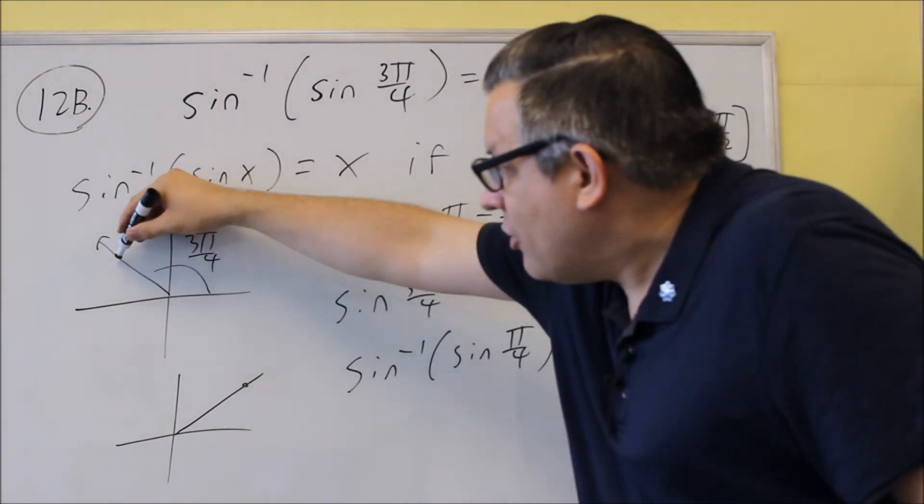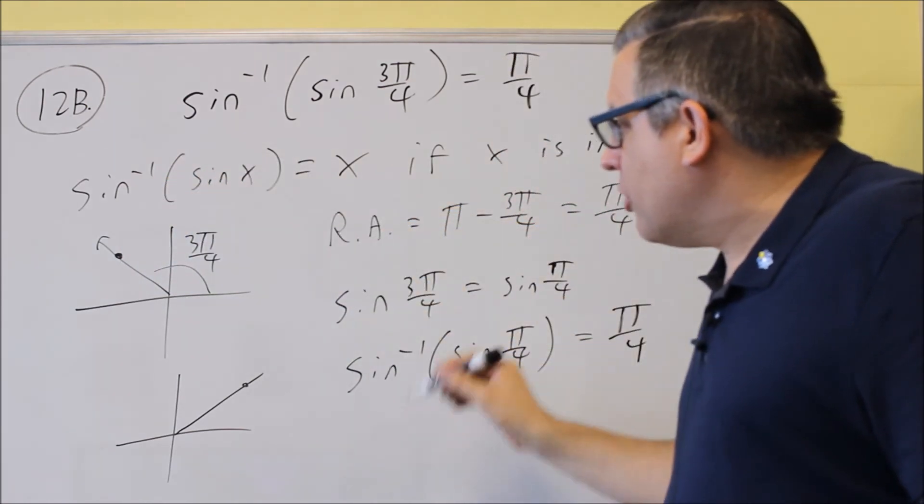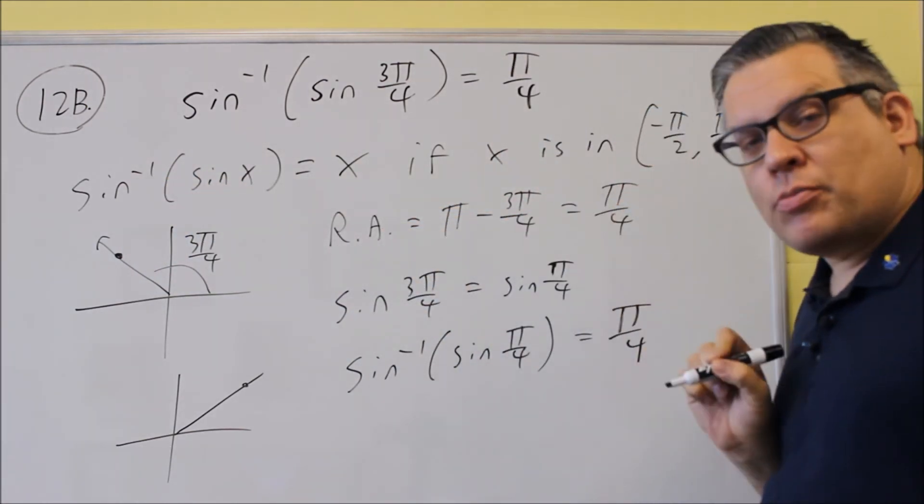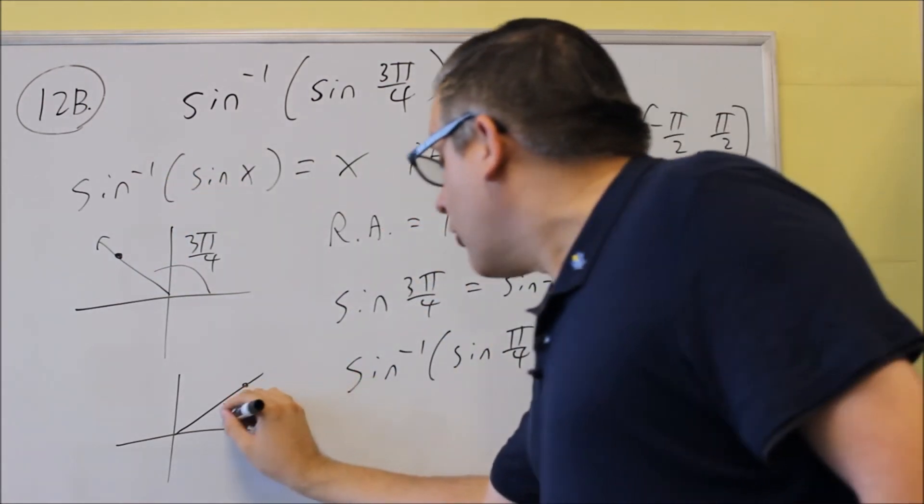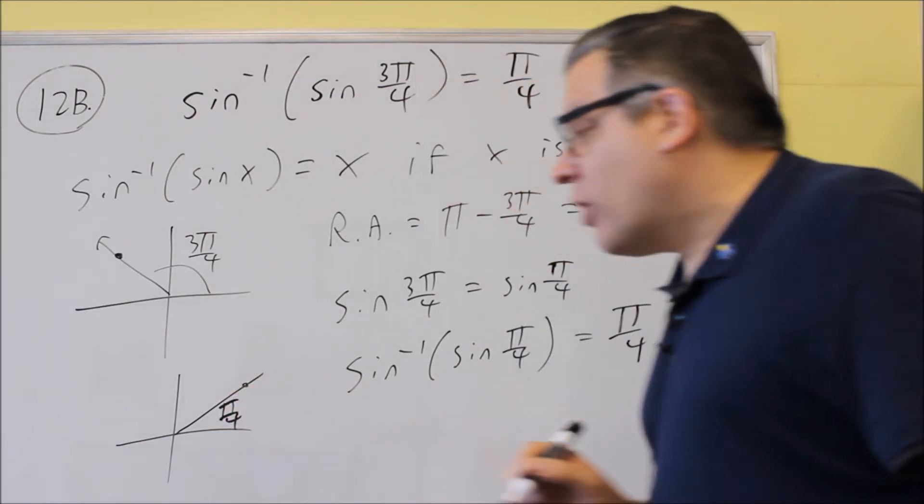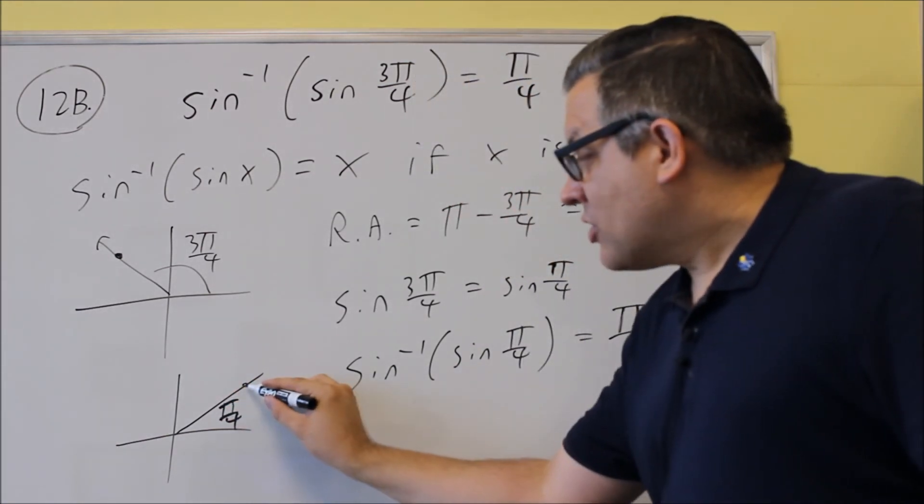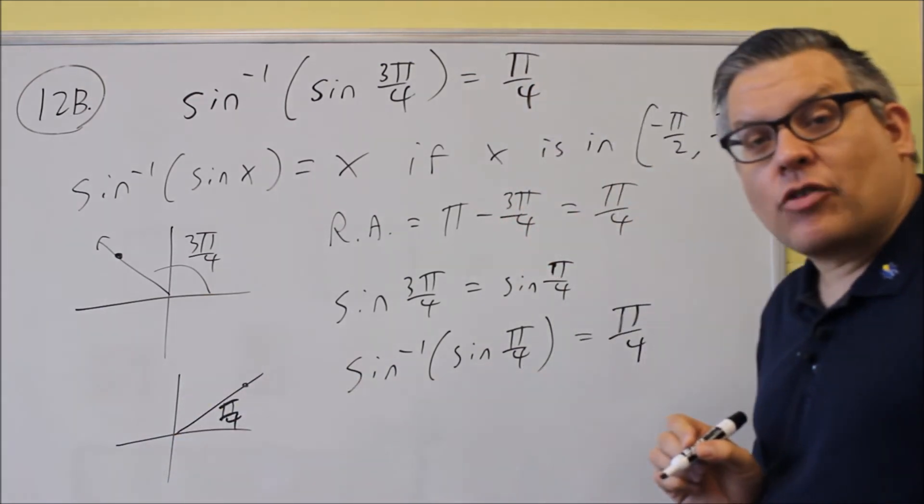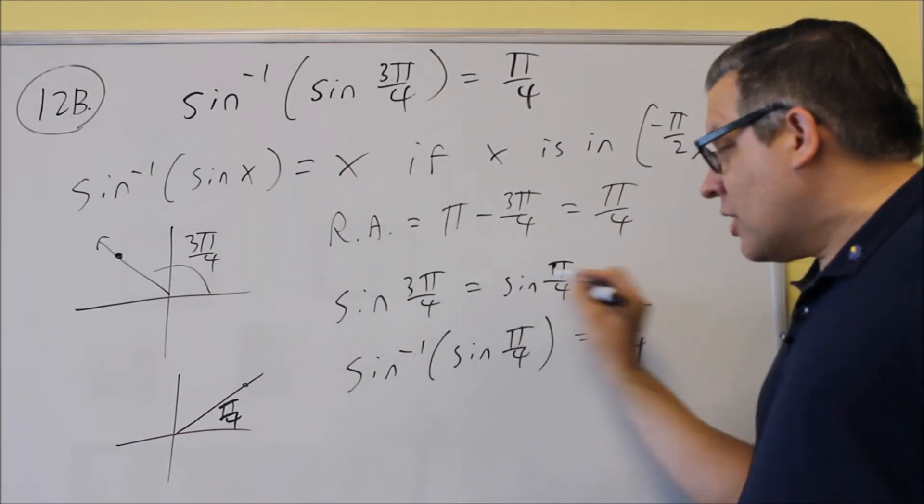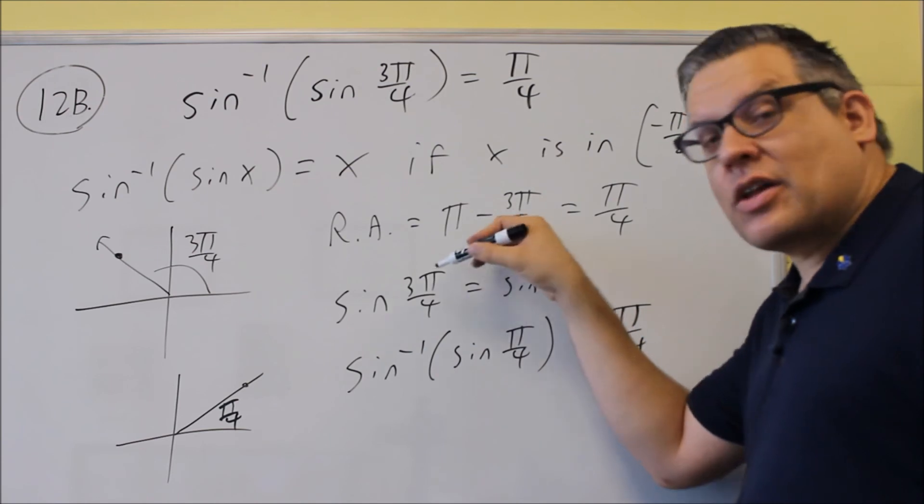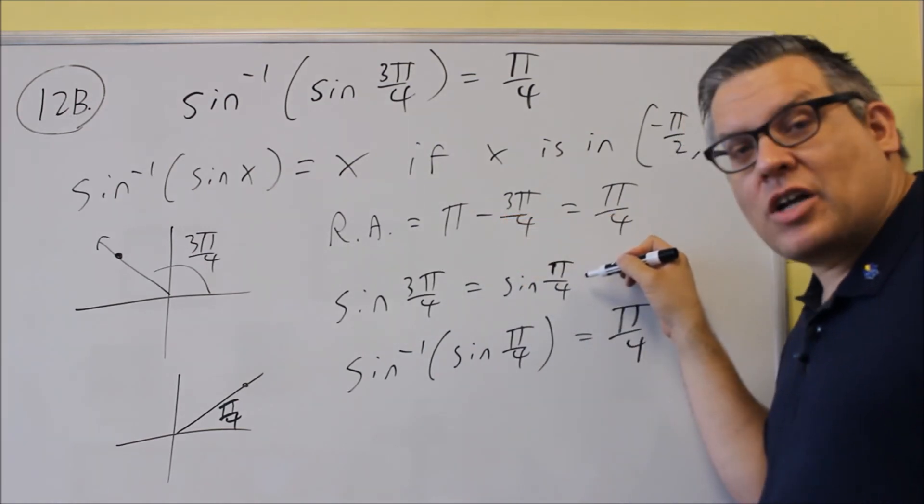Sine refers to a y-value on a unit circle, and so what we do is the reference angle will be π minus 3π over 4, and that's π over 4, which should be this angle right here. So this angle is going to have the same y-value as sine of 3π over 4, which means that because these y-values are the same, we can say that sine 3π over 4 is the same as sine π over 4.